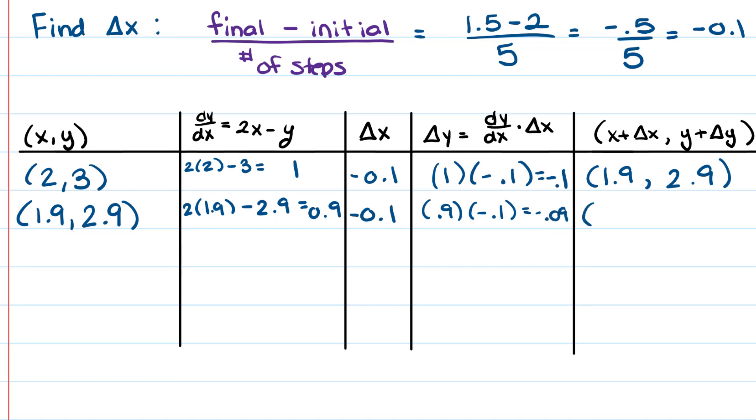So our new coordinate is 1.9 plus negative 0.1, so 1.8. And then our y value is going to be 2.81. And that comes from y plus delta y.